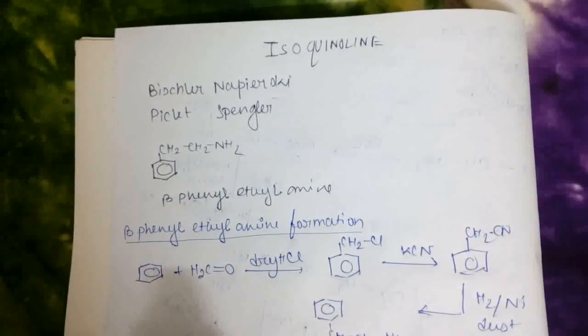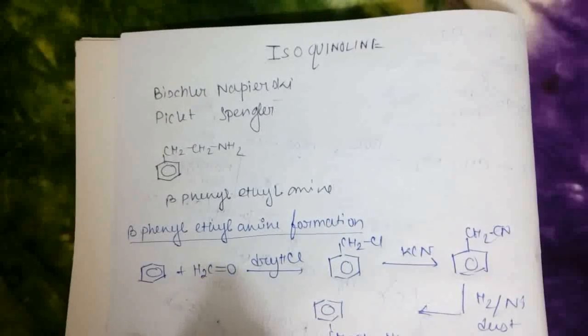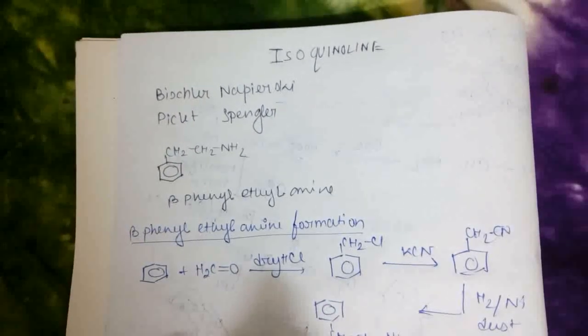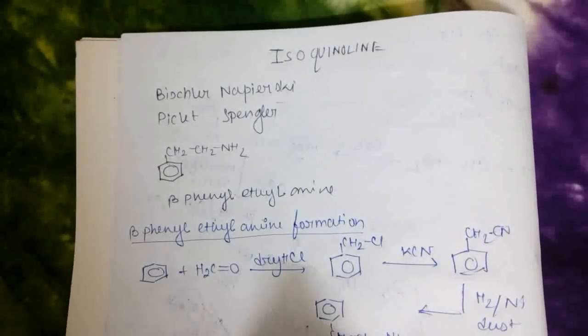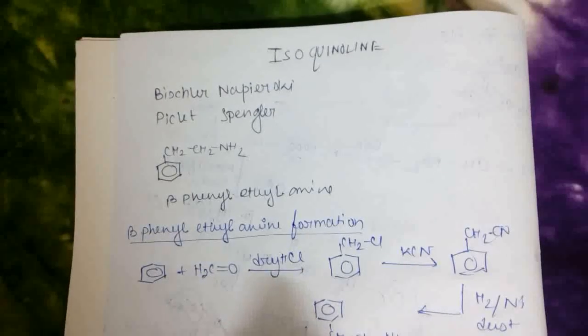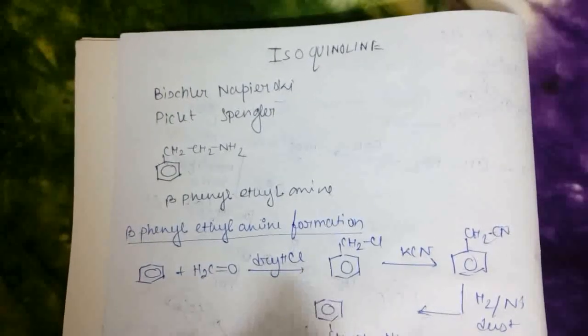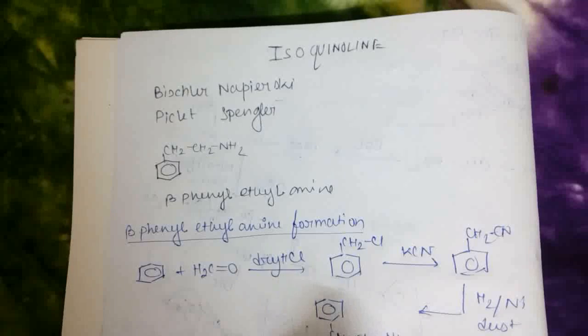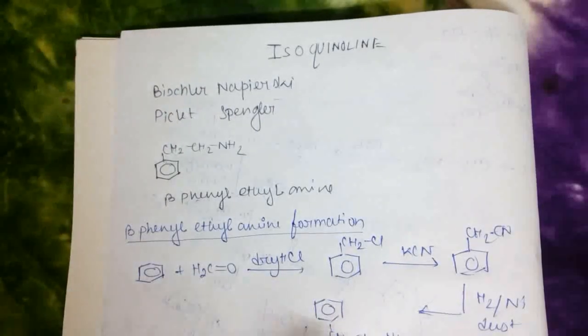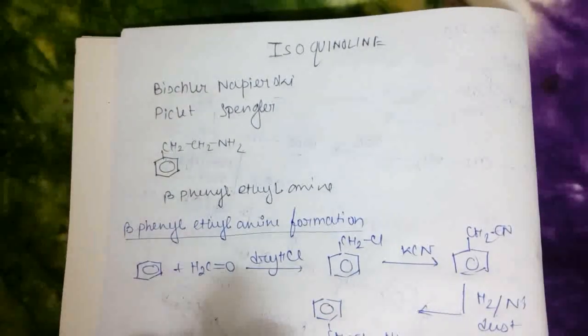as follows. At first, the C double bond O, this oxygen will capture H+ from HCl and a positive charge is generated upon oxygen. To neutralize this,